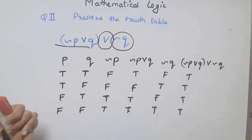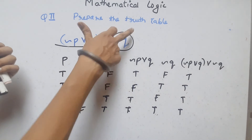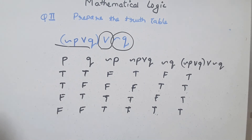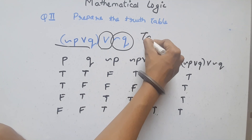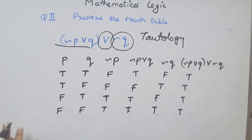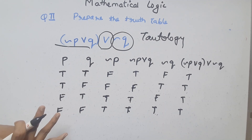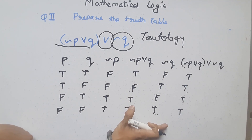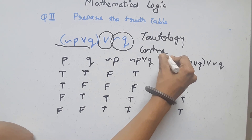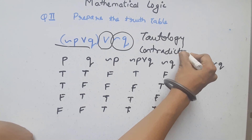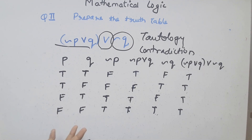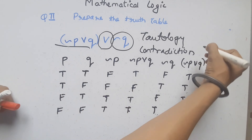Sometimes they also ask you to judge the final truth table. There are three types: if everything comes TRUE, we call it a tautology. If everything comes FALSE, we call it a contradiction. If there is a mixture of TRUE and FALSE, we call it contingency.